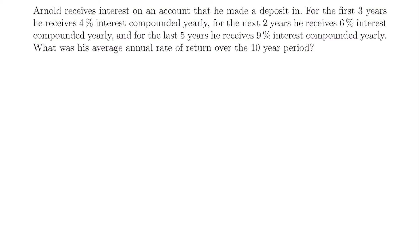For our second example, Arnold receives interest on an account that he made a deposit in. For the first three years he receives 4% interest compounded yearly, for the next two years he receives 6% compounded yearly, and for the last five years he receives 9% compounded yearly. What was his average annual rate of return over the 10-year period? Let's start by organizing what we know.